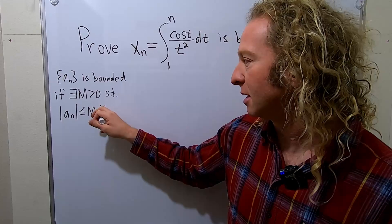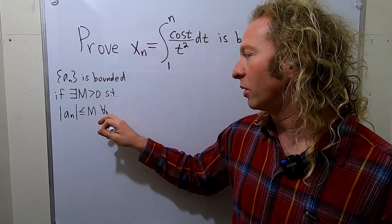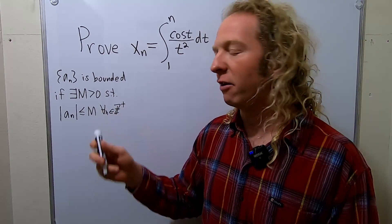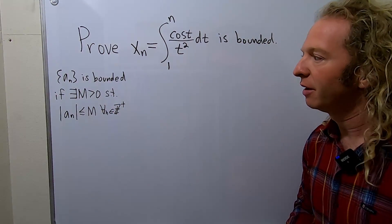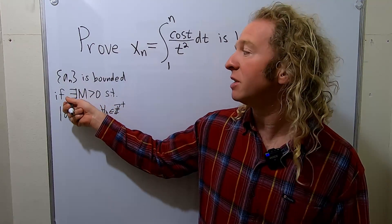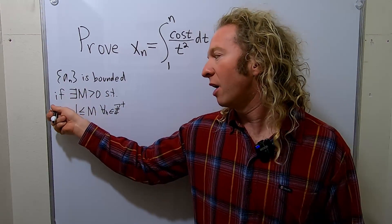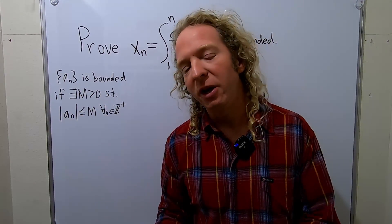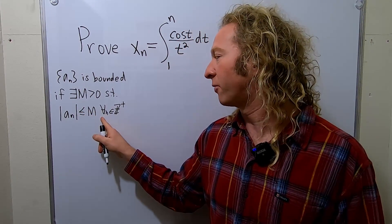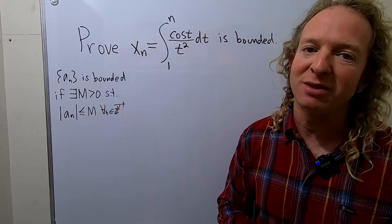So I'll say for all, that's the upside down a, lowercase n, in the set of positive integers. So I'm using some notation here that you may have not seen. This means there exists an m greater than zero. This is the absolute value. If you're working in higher dimensions, you just use the norm. Less than or equal to m, that means for all n, and this is the set of positive integers.